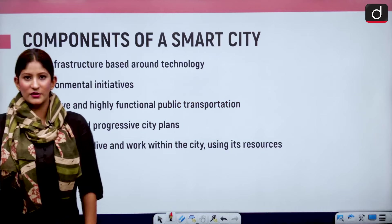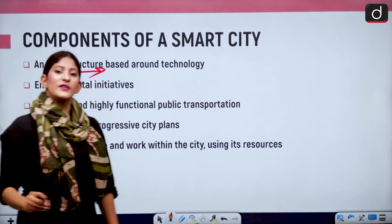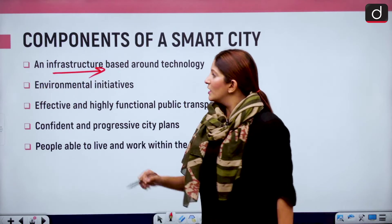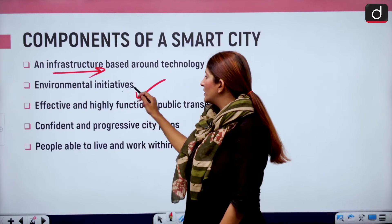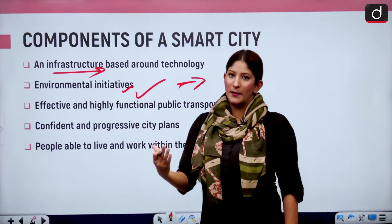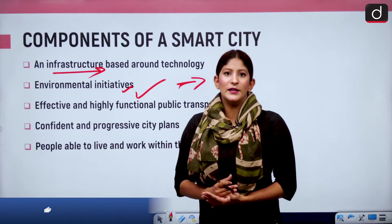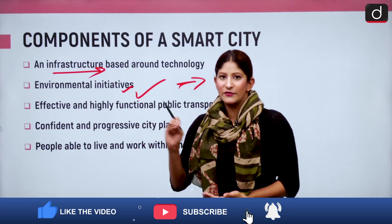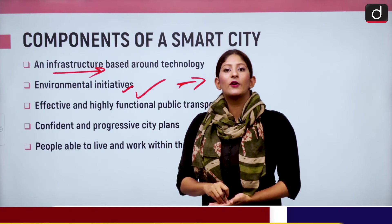What are the components of a smart city? First, an infrastructure based around technology — not only physical but also digital. Second, environmental initiatives so that we do not over-exploit resources, as doing so might create climate change and greenhouse gas emissions. Our mobility and technology must be made environmentally sustainable.